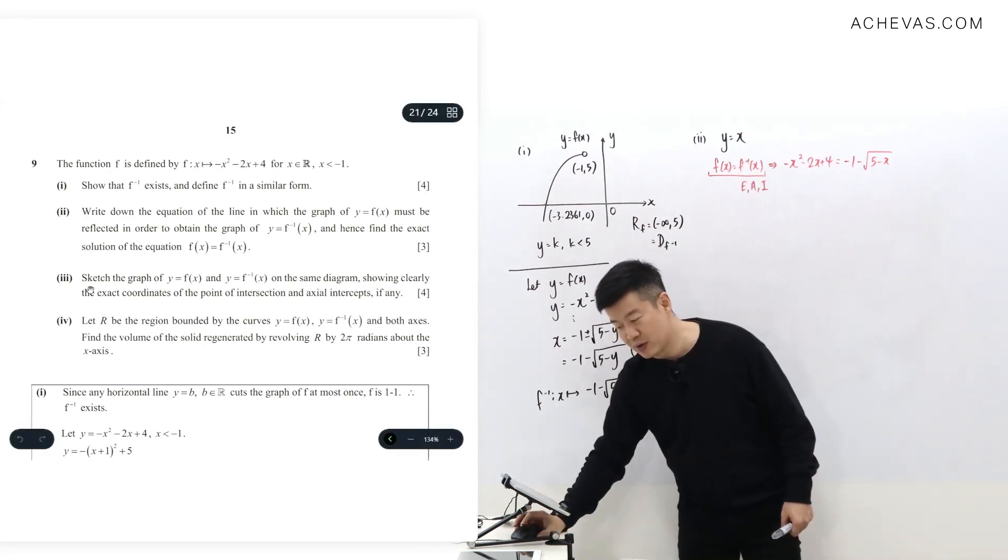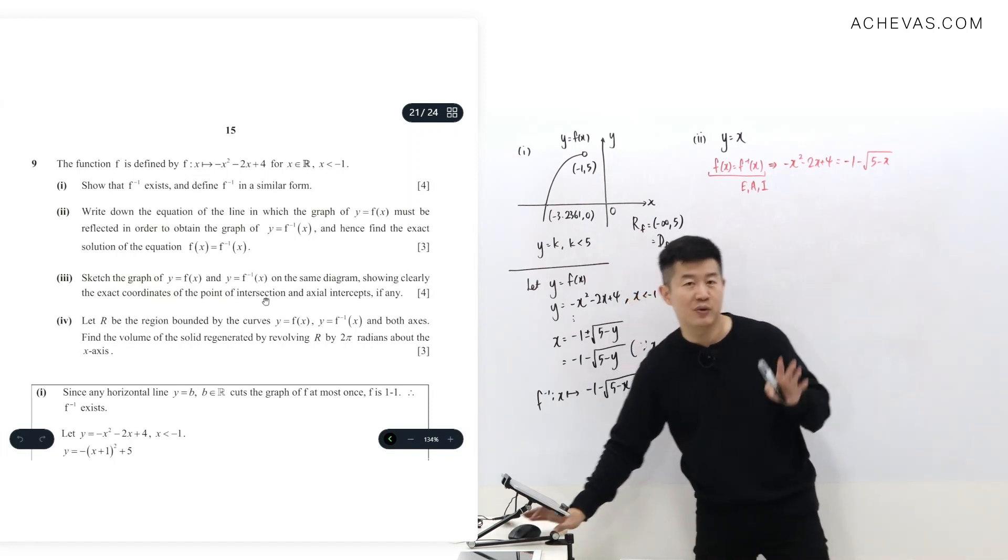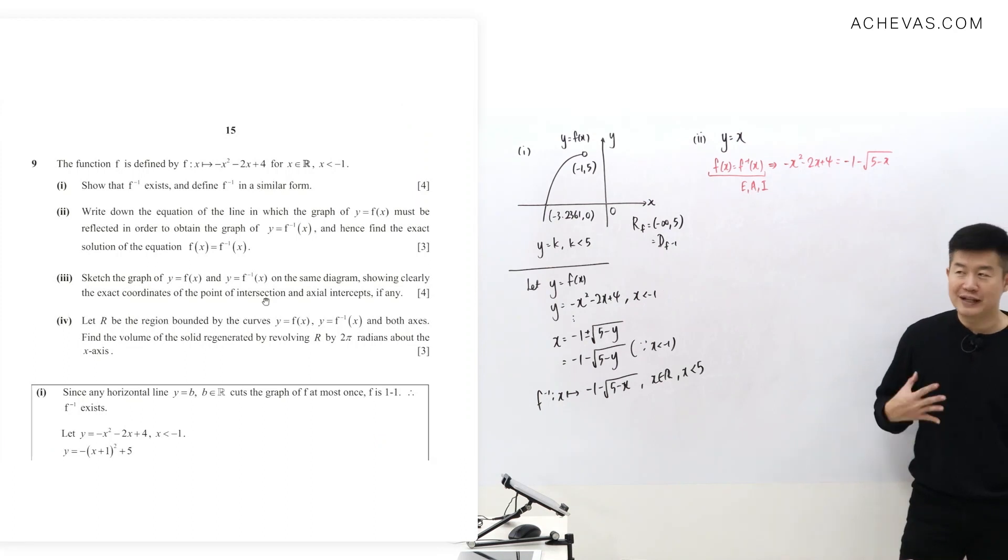That is also why, if you look at part three, I think part three should have come before part two, where they ask you to sketch the graph of y equals x and y equals f inverse (x). Part three should have come before part two, so this I feel is a flaw of this particular question.